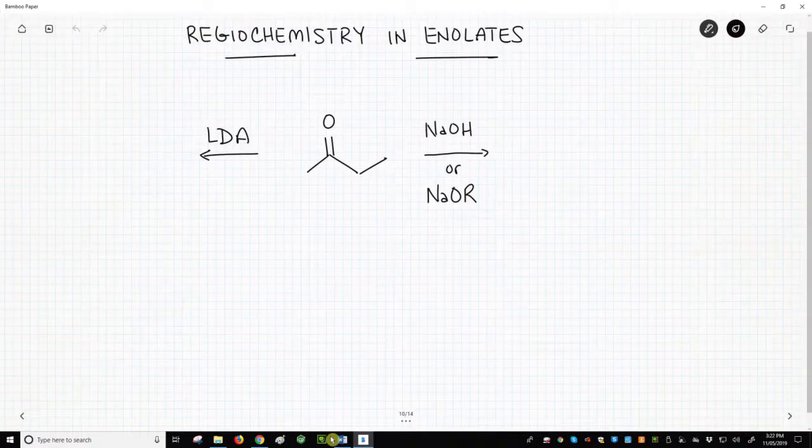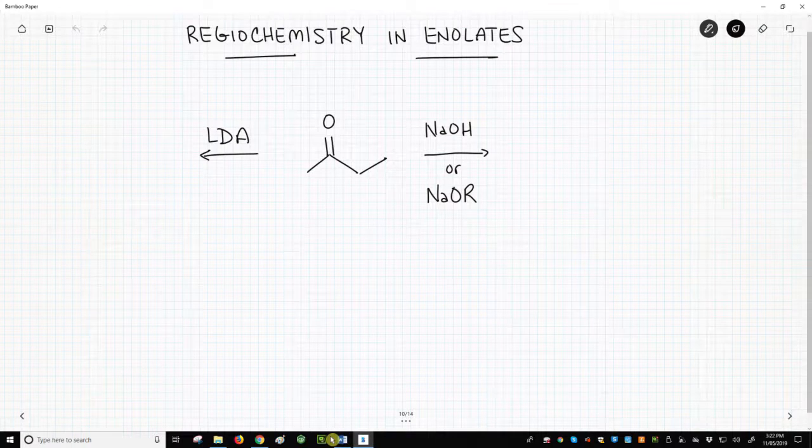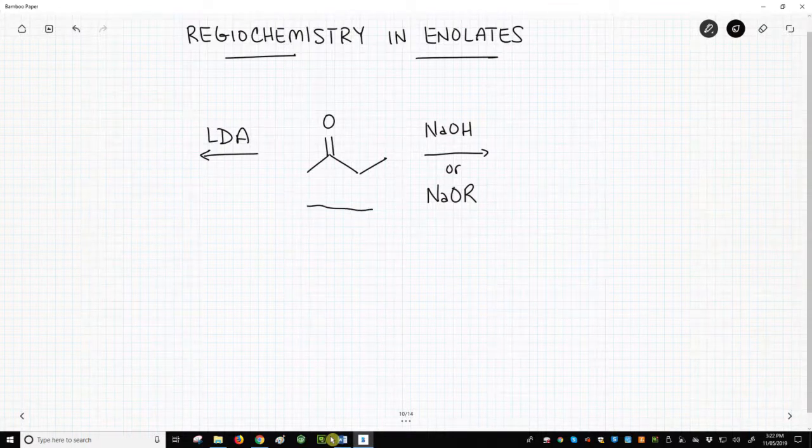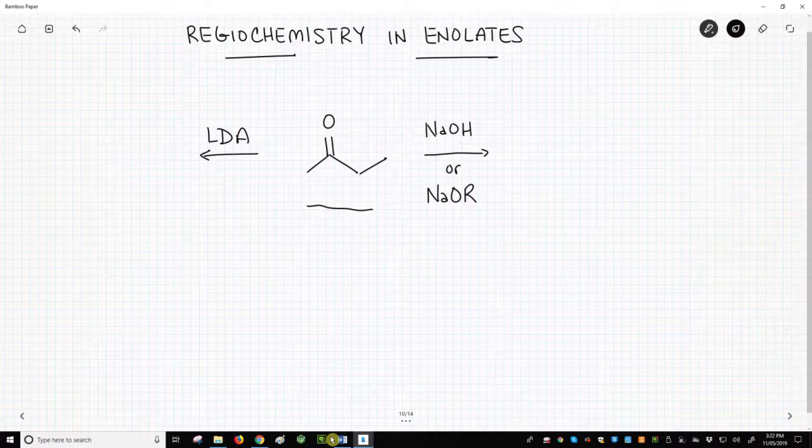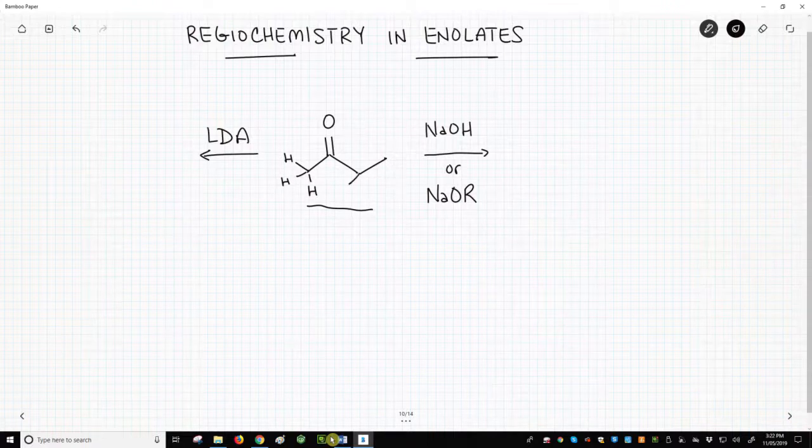In the middle of the screen is a simple ketone. This ketone has two different alpha carbons. The left alpha carbon is a CH3. The right alpha carbon is a CH2. When treated with a base, which proton is removed?